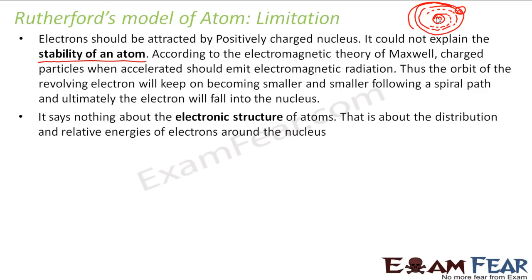Also, Rutherford's model says nothing about the electronic structure of atoms - that is, about the distribution and relative energies of electrons around the nucleus. Rutherford just told about the path followed by the electrons, but he did not talk about how electrons are distributed when an atom has many electrons. Whether they move in different orbits or the same orbit was not explained, so distribution and relative energies of electrons was not discussed at all.